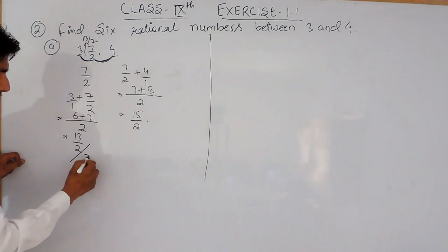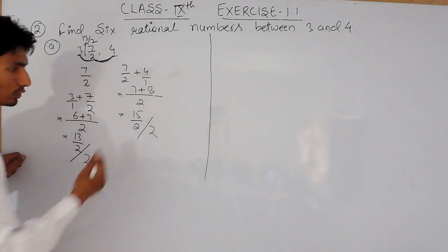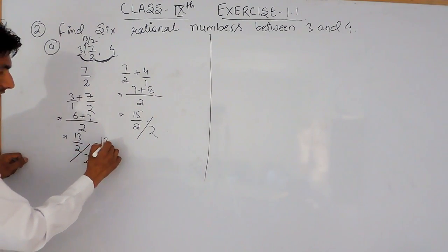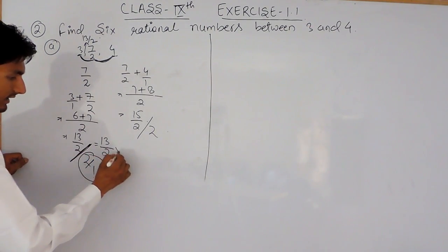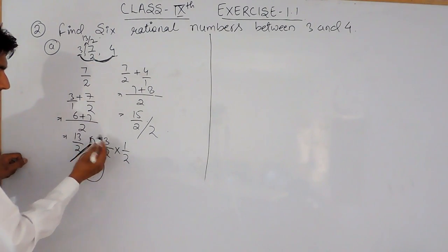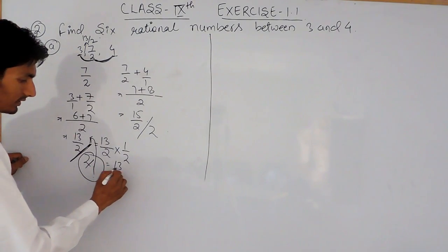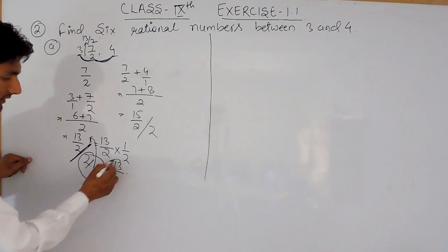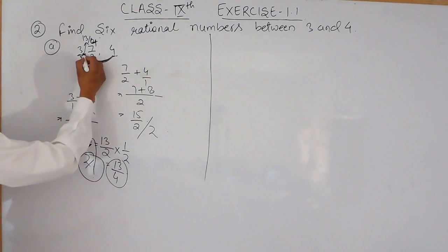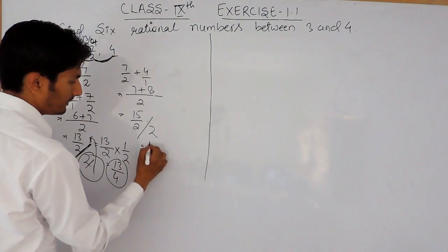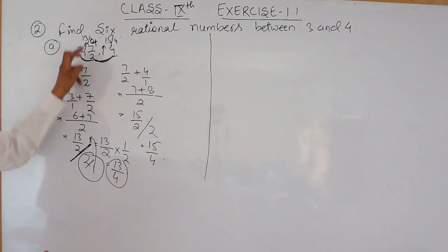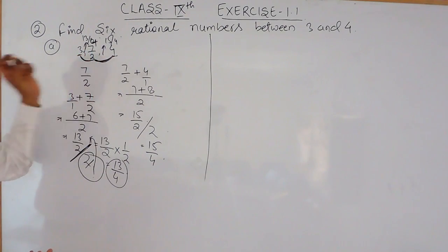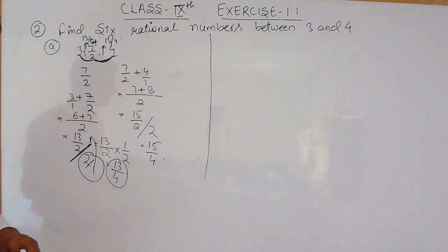After adding, you divide by 2. So for 7/2 plus 4, the result gives us 13 upon 4, which is another rational number. Similarly, 15 upon 4 is another rational number. So we have found 3 rational numbers between 3 and 4. If you want to find the remaining 3, the same procedure can be followed.